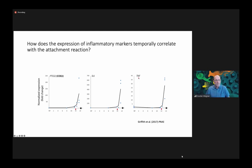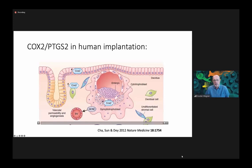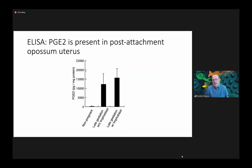An interesting gene is COX2, now called PTGS2 or prostaglandin synthase 2, which is greatly increased in late gestation. When we looked at protein localization, we found that COX2/PTGS2 protein is primarily located in the luminal epithelium — quite similar to what we see in human implantation. It's not only PTGS2; prostaglandin E2 itself is also present in the uterus, as we can measure with ELISA.